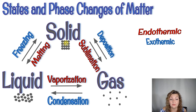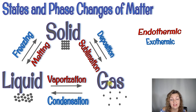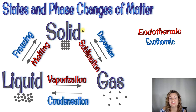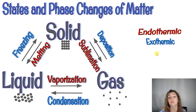We can do this whole cycle backwards: going from a solid to a liquid we call that melting; a liquid to a gas we call that vaporizing; and a gas to a solid we call that deposition. The phase changes are color-coded so you can review which ones are endothermic and which are exothermic.